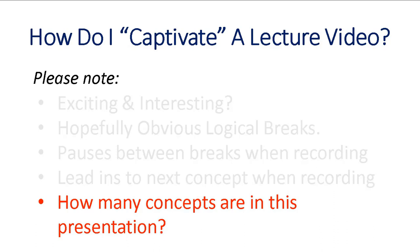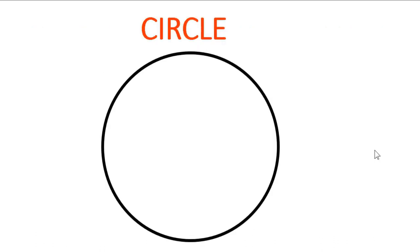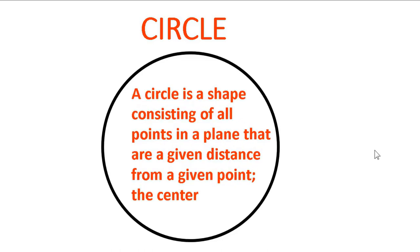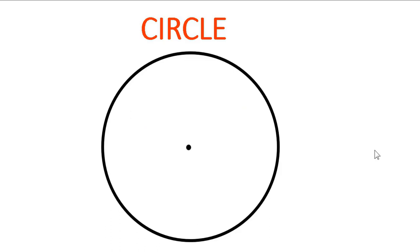See if you can tell how many concepts are in the following presentation. Let's review some basic shapes as a means to learn this software. We'll start with the circle. You know what the definition of a circle is — it's not just some round thing. It's a shape consisting of all the points in a plane that are a given distance from a given point, that given point being the center.